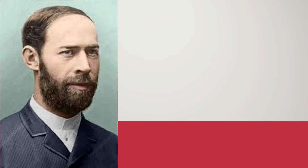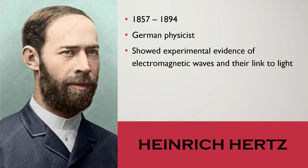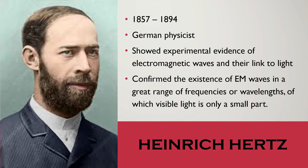Next on our list is Heinrich Hertz, born in the year 1857 and died in the year 1894. He was a German physicist who showed experimental evidence of electromagnetic waves and their link to light by confirming the existence of electromagnetic waves in a great range of frequencies or wavelengths, of which visible light is only a small part. Also, remember that the unit of frequency — a measure of the number of waves that pass through in a given time — is named after him, which is Hertz.